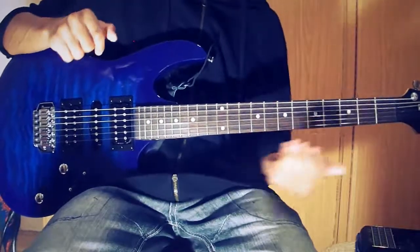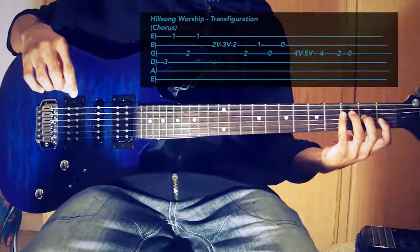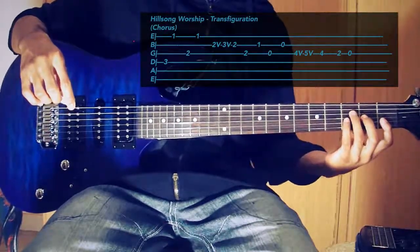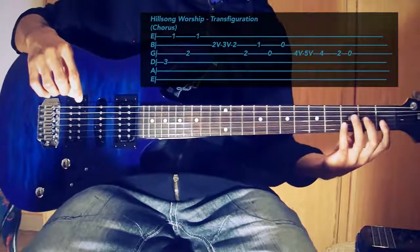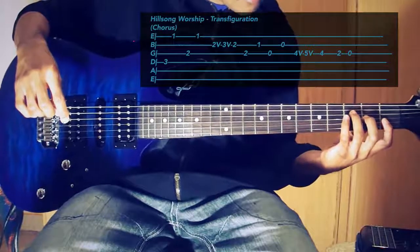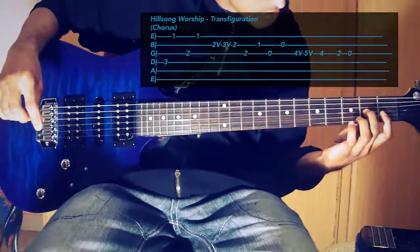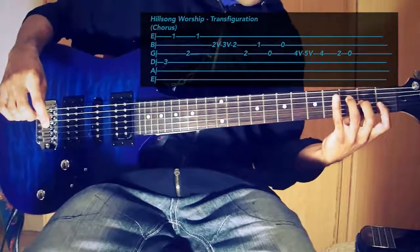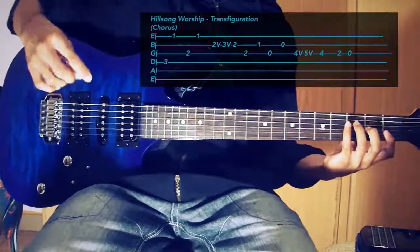Okay, so let's begin. You are going to be holding this formation here with your index finger covering the first fret of the E string and the B string. Then your middle finger is going to be on the third fret of the G string and your third finger is going to be on the third fret of the D string.